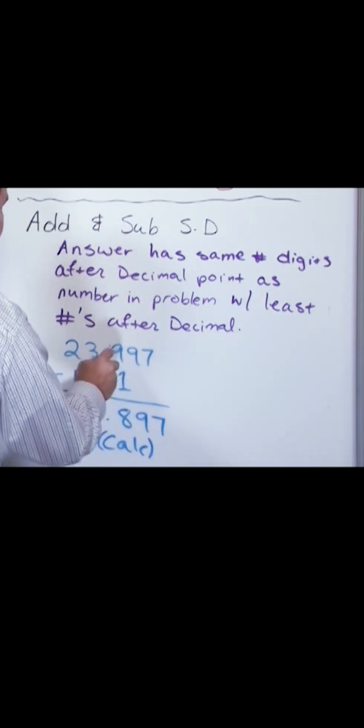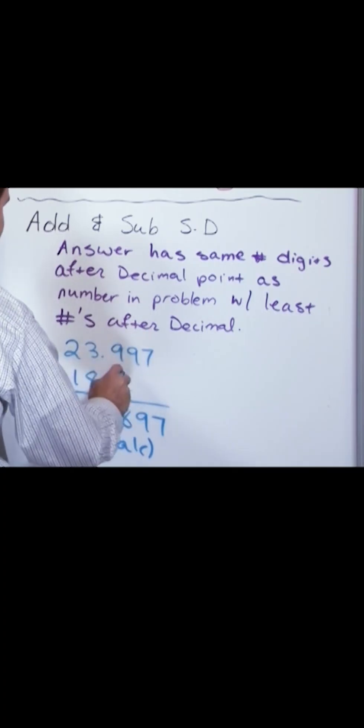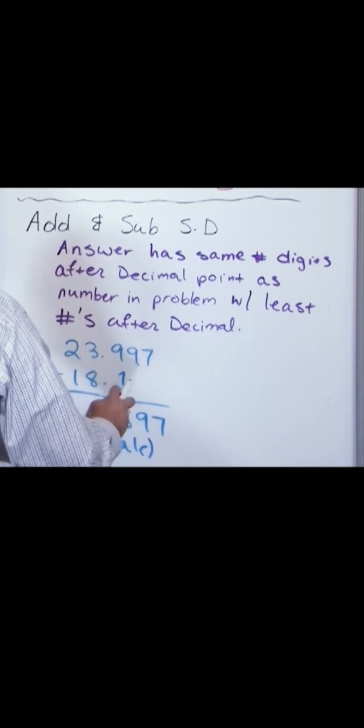So here, this has three significant figures after the decimal. This has one significant figure after the decimal.